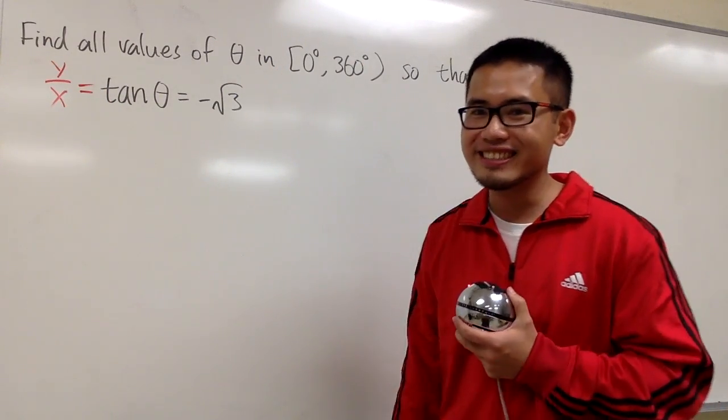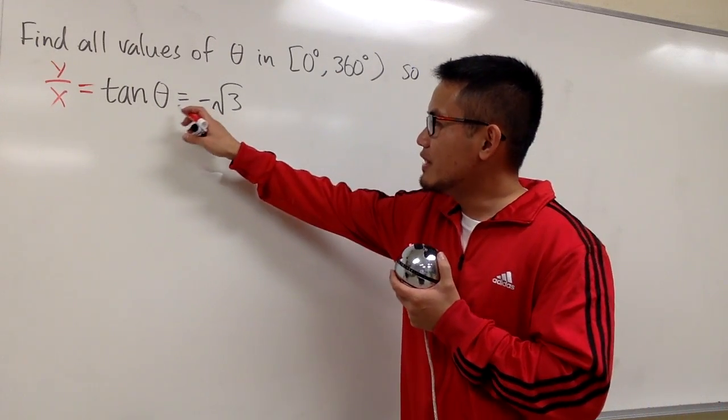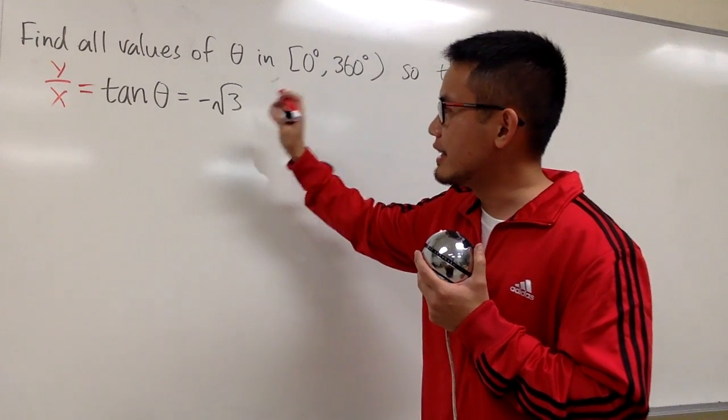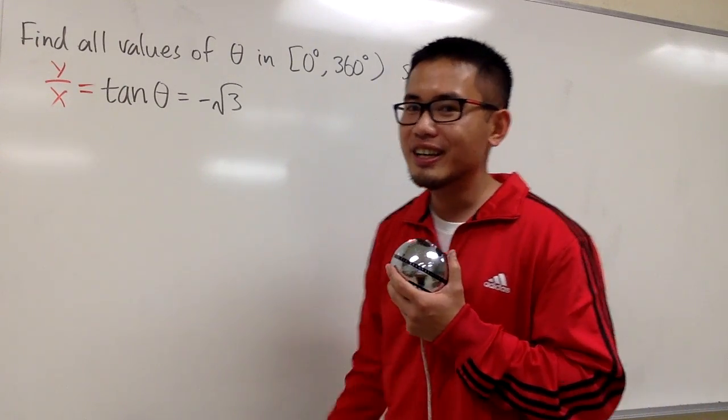Not the usual opposite over adjacent. We are given that tan θ = -√3. This is no good because I need to look at this as a fraction so I can mix and match.